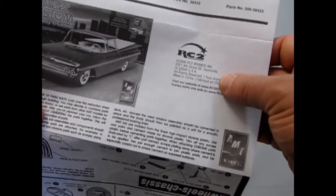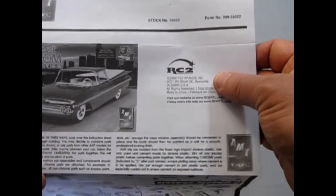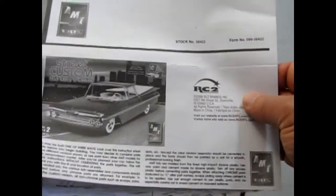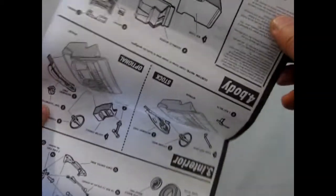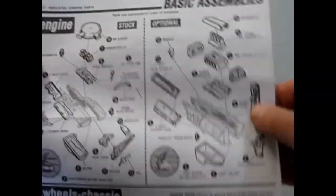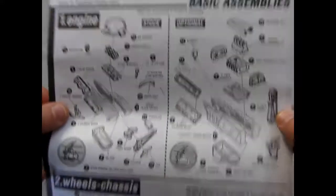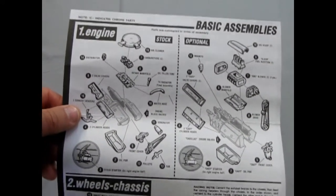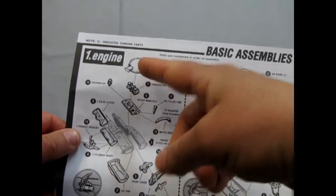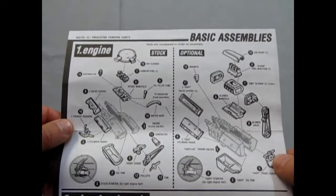Now this one came out under the Round 2 label back in 2006, but the actual kit itself was designed in the 60s and part of AMT's trophy series. And these instructions are a pretty good reproduction of the original instructions. Actually, you get your stock engine with the tri carburetors and the big air cleaner for 1959.